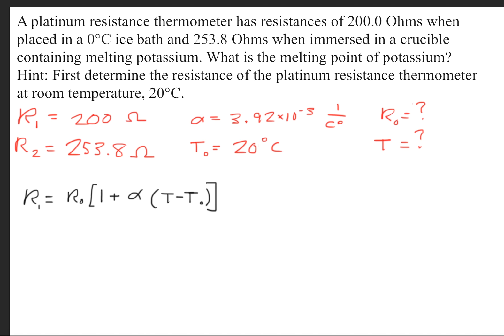The alpha in this case for platinum will be 3.92 times 10 to the negative third power, 1 over degrees Celsius. The initial temperature that we're given is 20 degrees Celsius.